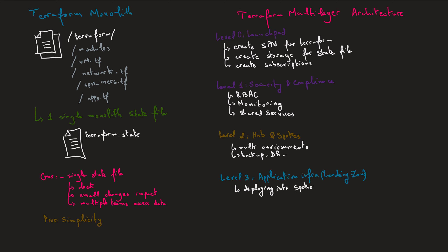Level three is the landing zone for our applications. We deploy resources into the spoke network — resources like the AKS cluster, virtual machines, firewall, application gateway, ACR for the registry, key vault, app services, app service environment, and any component that is part of your application architecture or infrastructure.